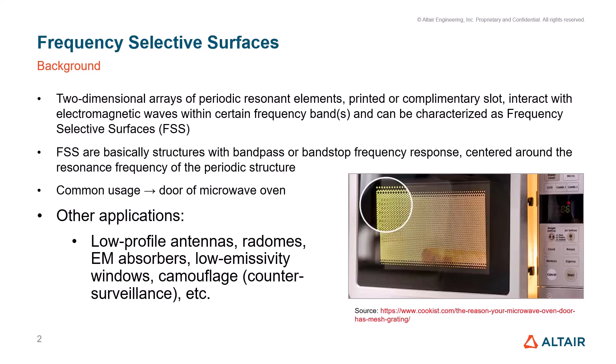When passing through these structures, if we look at where they are used, one of the common uses we encounter daily is the microwave oven. You can see a mesh-like structure on the door of every microwave oven, which is a frequency selective surface. This periodic structure acts as a band-stop filter preventing the leakage of microwaves.